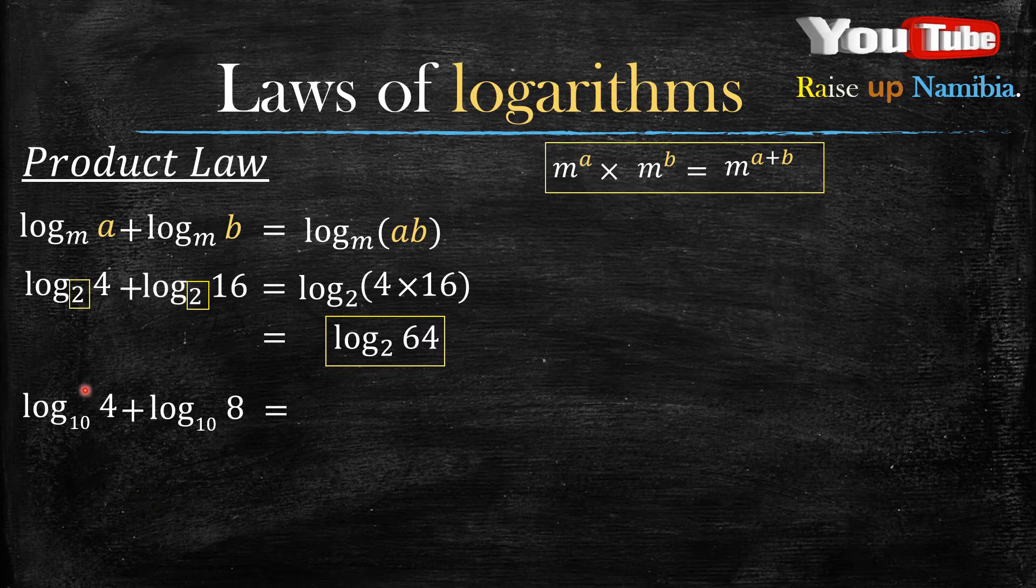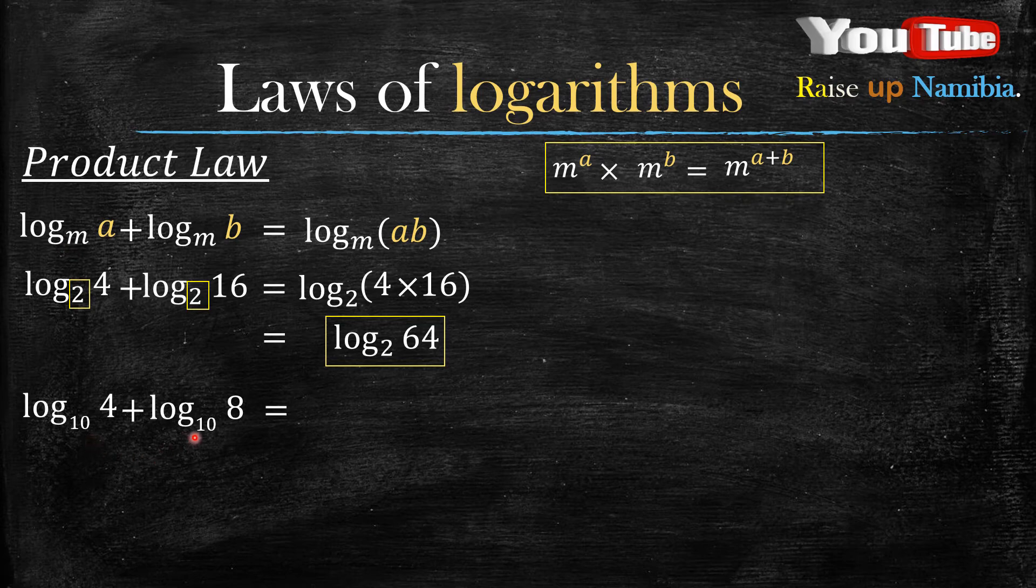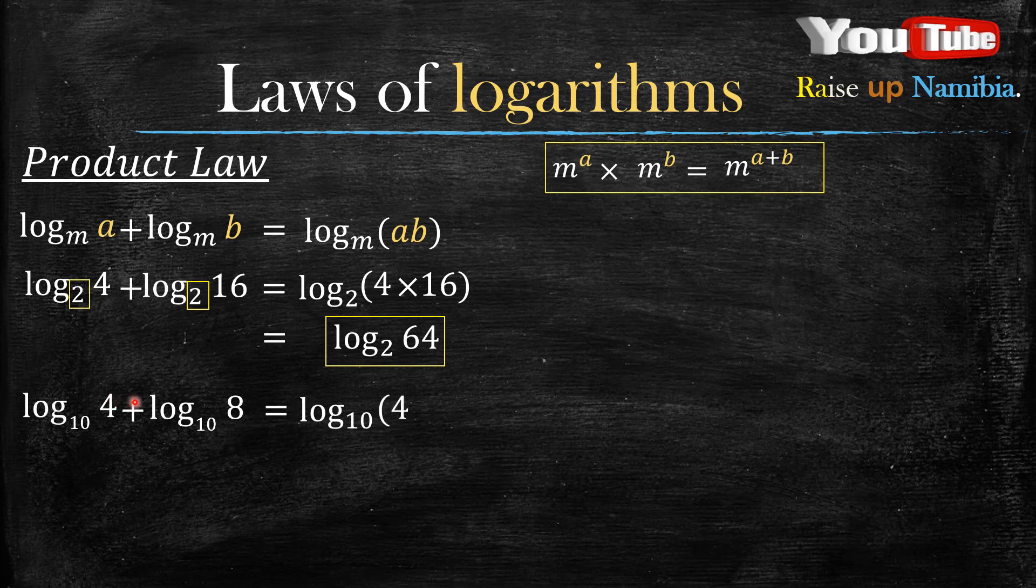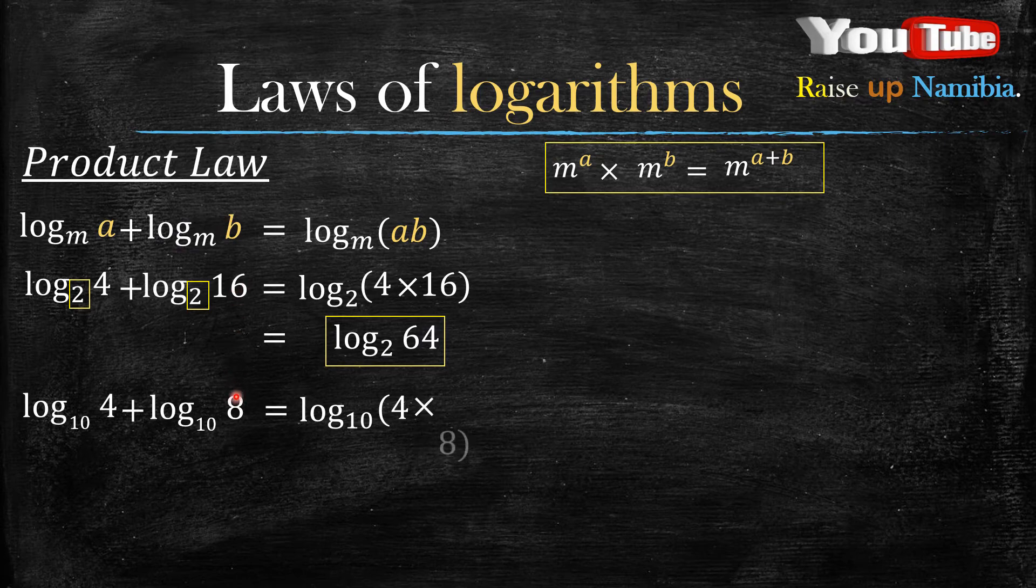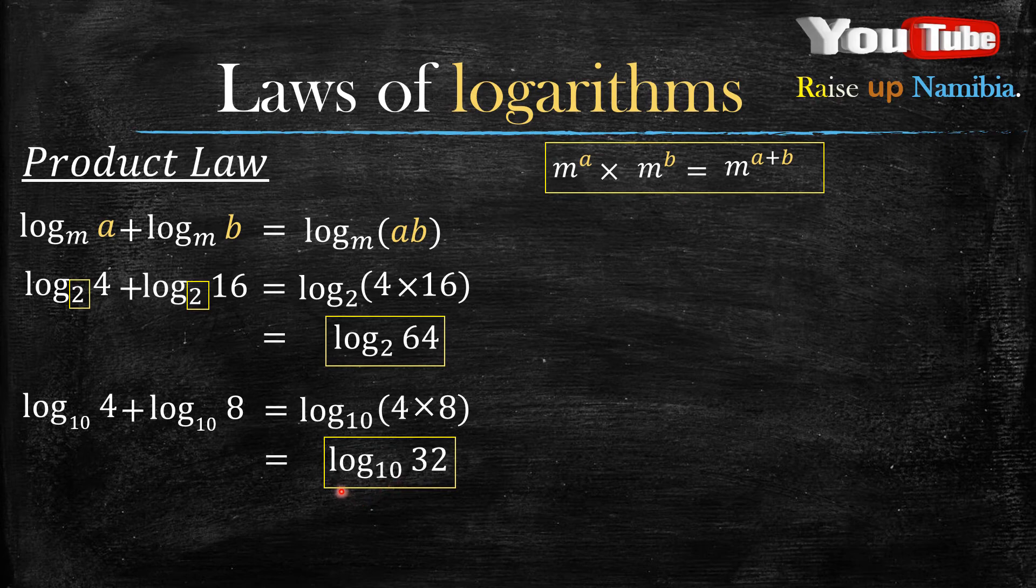Now that we know both our bases are 10, what is at a? We have a 4, so we multiply that 4 with whatever is at b, which is 8. Four multiplied by 8 will be 32, so our answer is log base 10 of 32. You've just written this as a single logarithm.